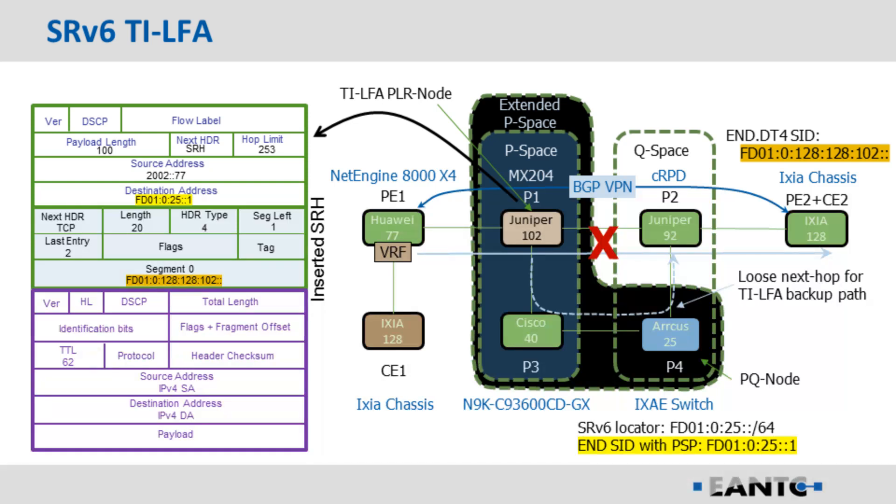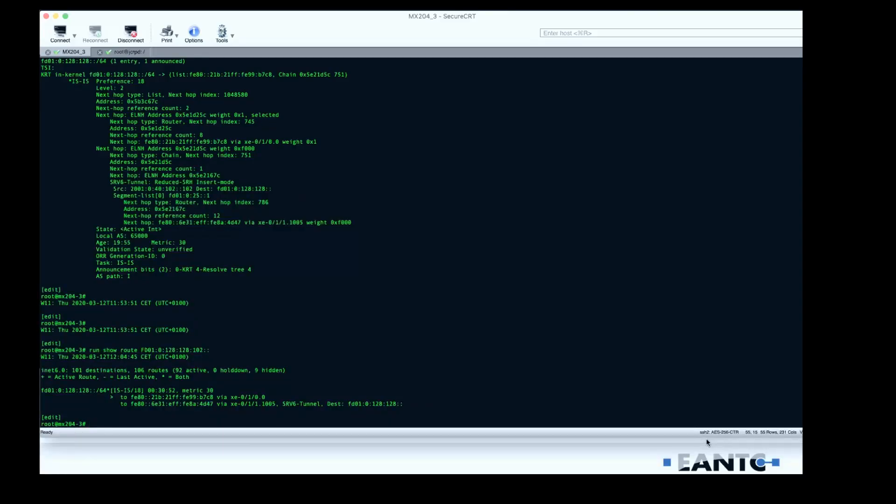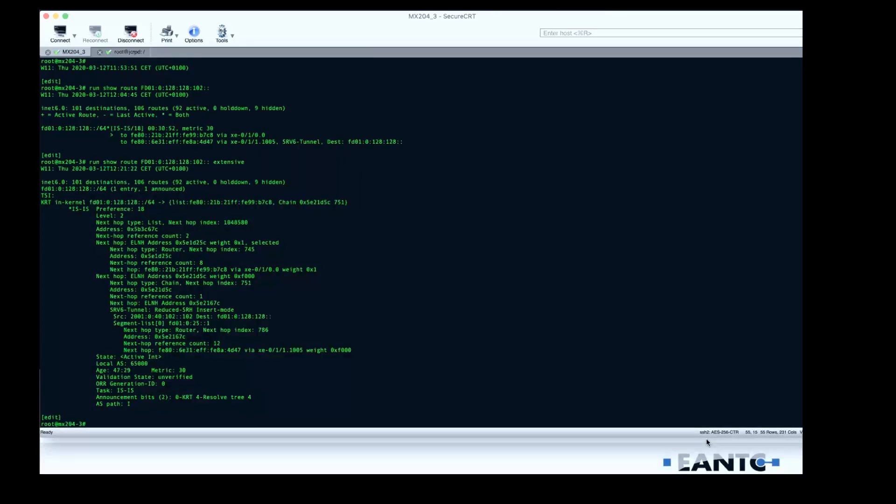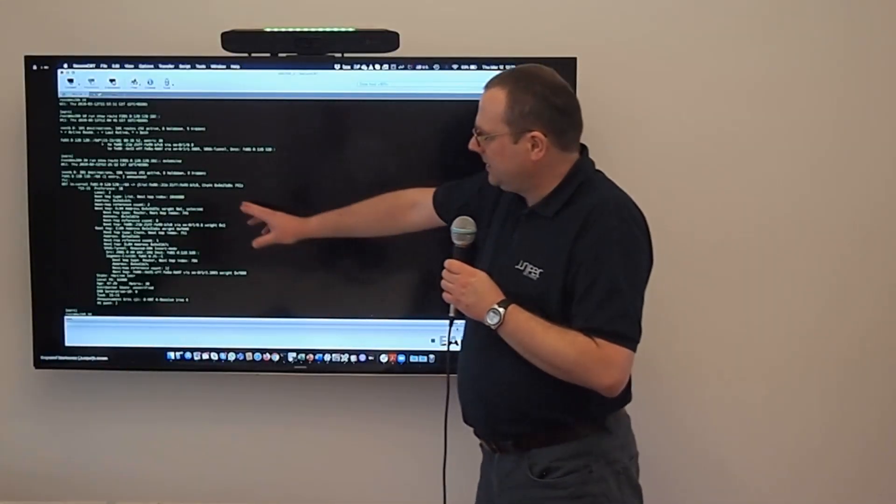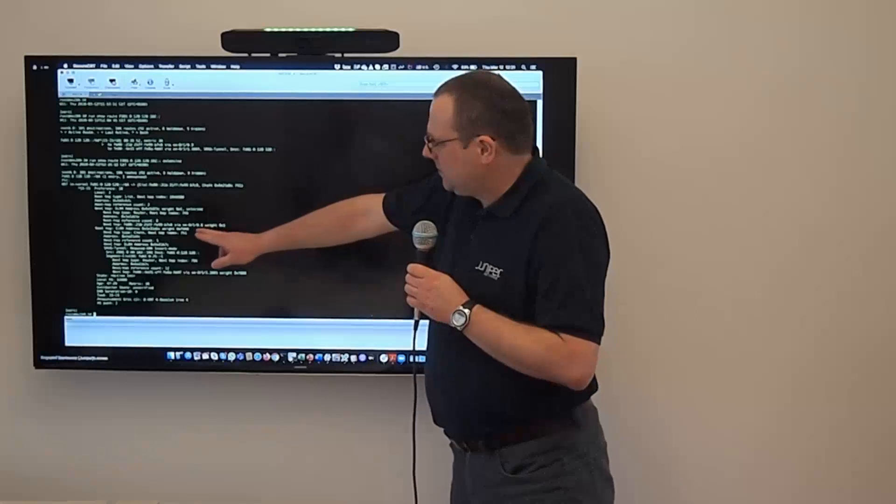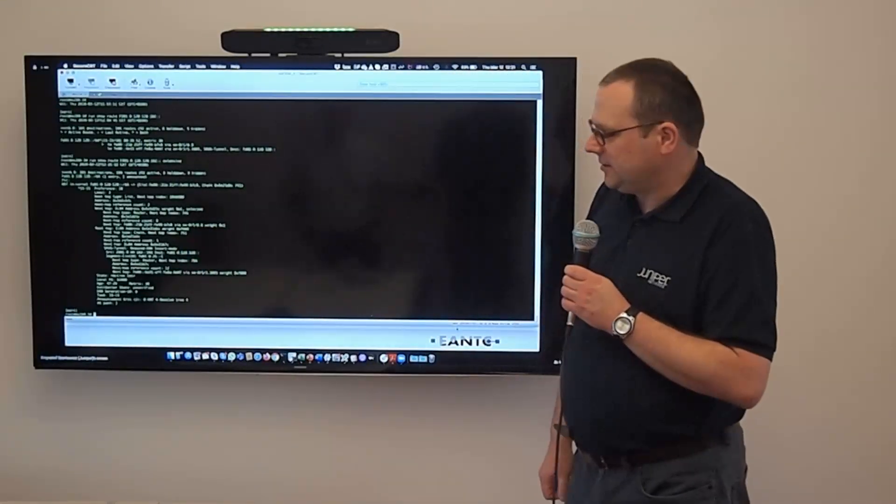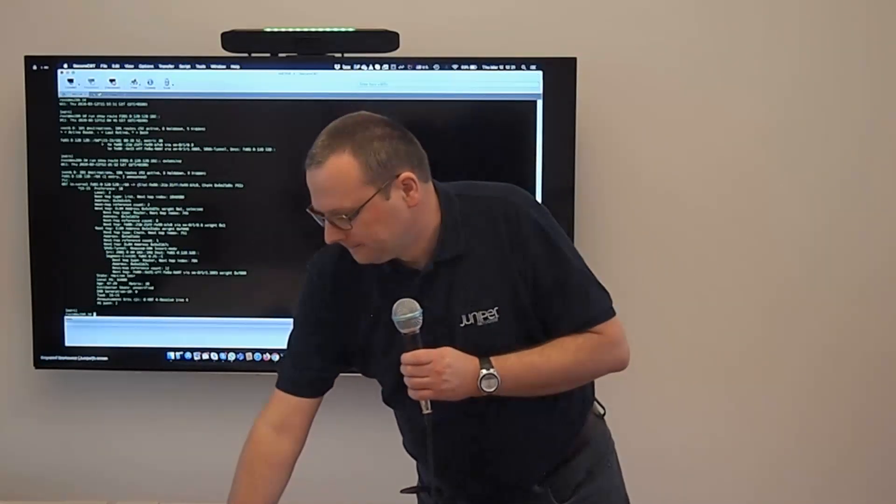I have a couple of show commands that I can show on the Juniper. Let me quickly switch the screen. This is the show route for the end DT4 SID advertised by Ixia. You see here we have two next hops. One next hop over interface 010, which is the direct next hop to the Juniper 92, which is containerized RPD. Another next hop is going over interface to Cisco. The second next hop has some magic SRv6 standard here. When I go for more extensive view, you see the next hop, direct next hop is just IPv6 next hop. And this backup next hop is 0F00, next hop over segment routing tunnel. Thank you very much.